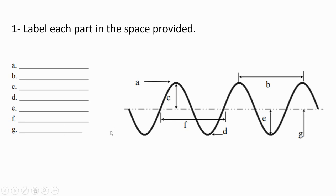Okay, so now let's see how you did. Point A is the crest. Point B is the wavelength from crest to crest. C is the amplitude.